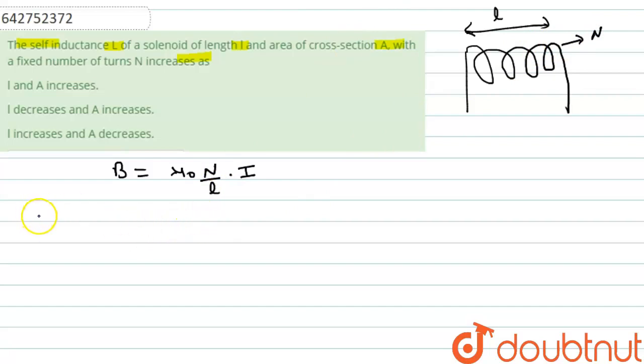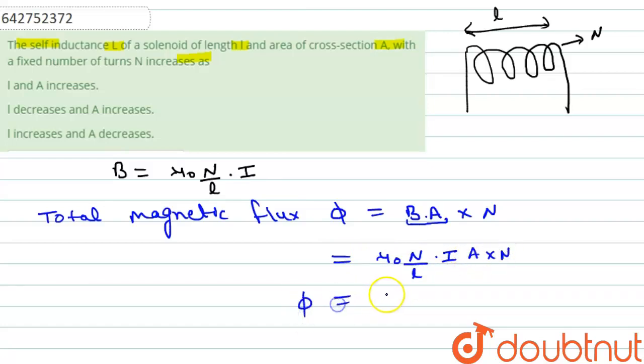So we can write that the total magnetic flux φ, which will be equal to BA. This is magnetic flux due to one turn and we have N turns, so it will be equal to BA × N. So we can put the values and here B is μ₀N/L × I × A × N. So after simplification we can write μ₀N²IA/L.